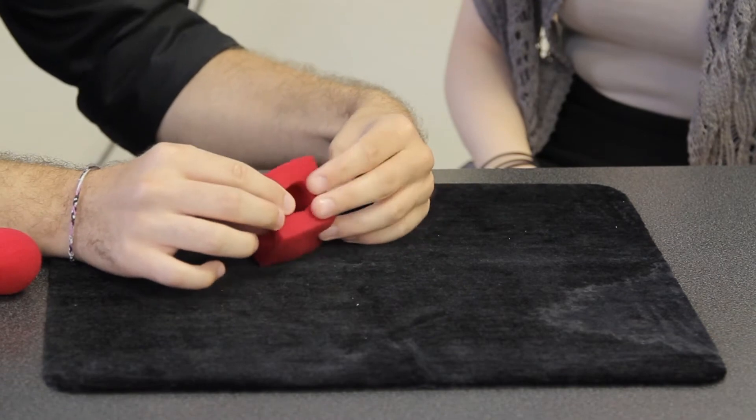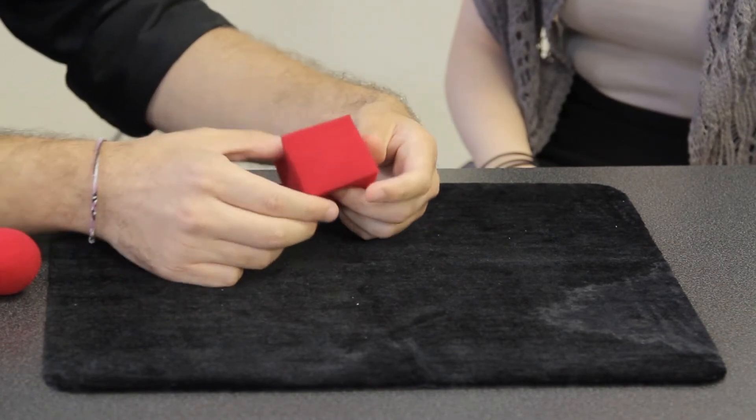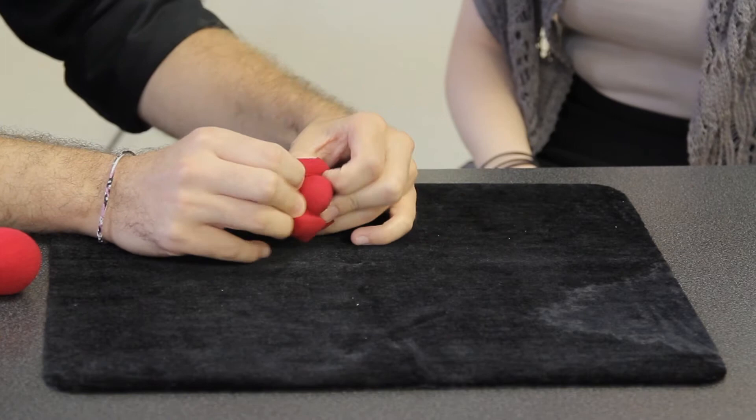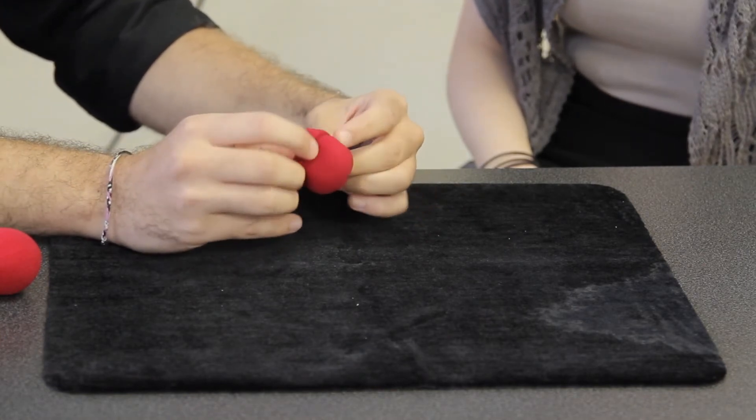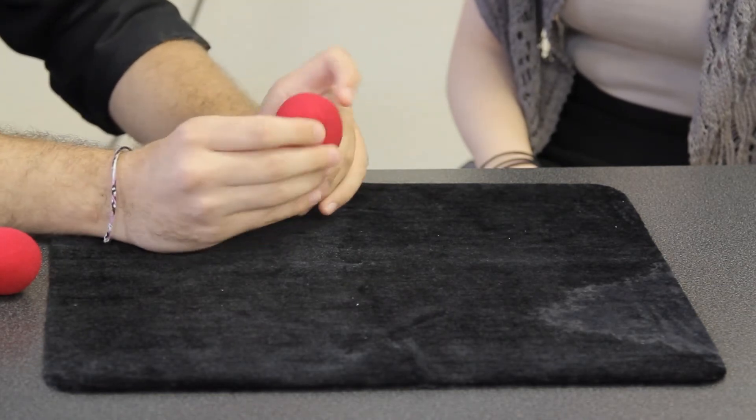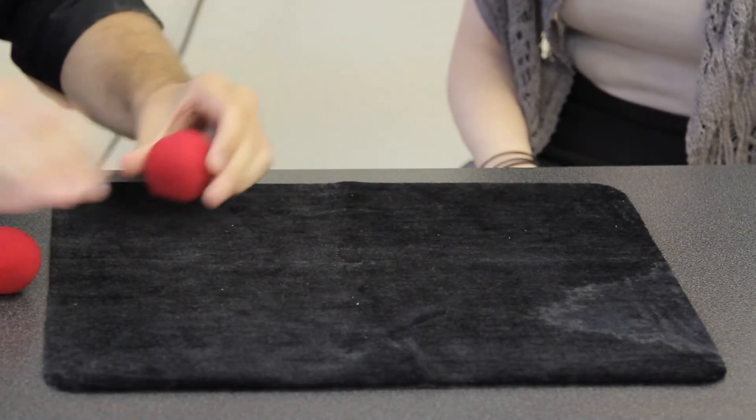And we're going to take and very slowly and very carefully take our thumbs, push it through inside itself and it'll form a round looking sponge ball.